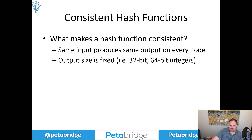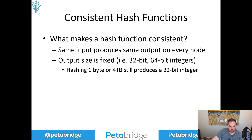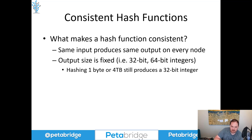The other thing that makes a hash function consistent is that the output size is a fixed range. For instance, Murmur3 might only implement a 32-bit or a 64-bit integer. This means that whether I pass in a one-byte byte array or maybe a four-terabyte byte array, I'm still getting a 32-bit integer at the end. The output size is fixed. This means that we can essentially plot all the values that might be possibly produced from this hash function into a clock-like structure called a hash ring, and distribute that evenly across all the nodes in our network responsible for hosting some of our state.